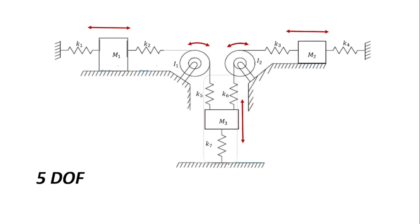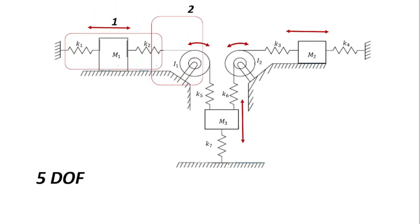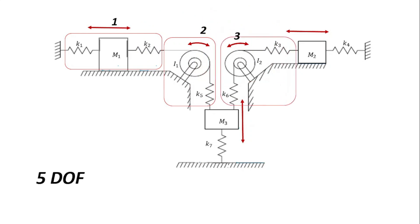Finally, if mass m3 is given any form of vertical displacement, springs k7, k5, and k6 will either contract or extend to cater for the movement of mass m3, such that every other part of the system is not affected. Counting all the distinct movements — movement of m1, movement of pulley i1, movement of pulley i2, movement of m2, and movement of m3 — all making five degrees of freedom.